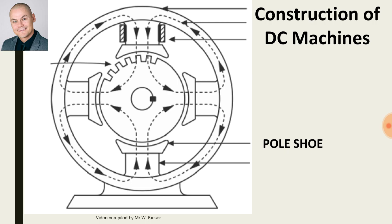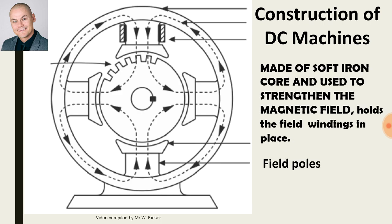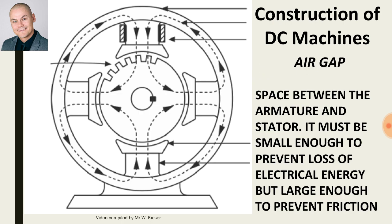The pole shoe also helps to close the air gap and helps to distribute the magnetic flux. The field pole, also known as the pole core, is usually made out of soft iron and is used to strengthen the magnetic field and also helps to hold the field windings. The air gap is the gap between the rotating part and the stationary part. It must be small enough to prevent loss of energy but large enough to prevent friction.